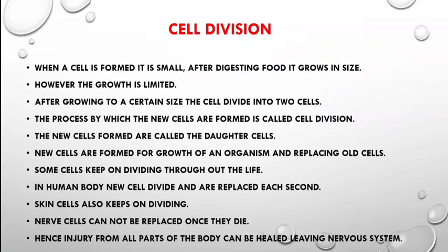Skin cells also keep on dividing. Sometimes we see that our skin becomes very dry, especially during winter time — it becomes very itchy, and we can even see white flakes coming off the skin. Those flakes are the old skin cells which keep on shedding off, and those old cells are replaced by new skin cells.